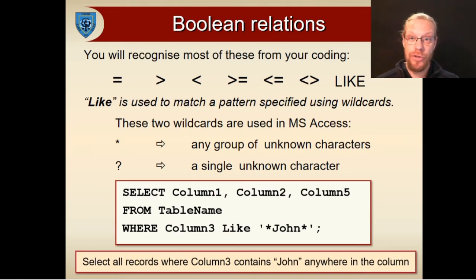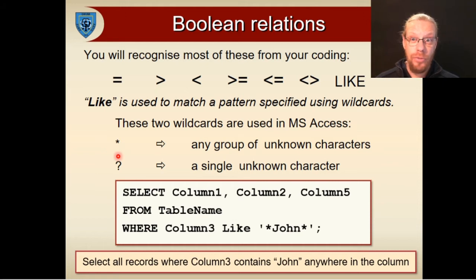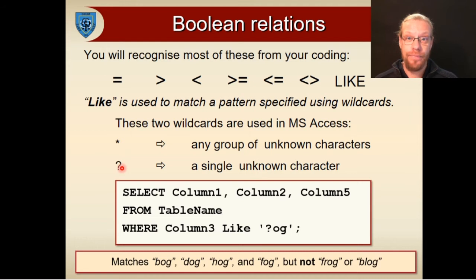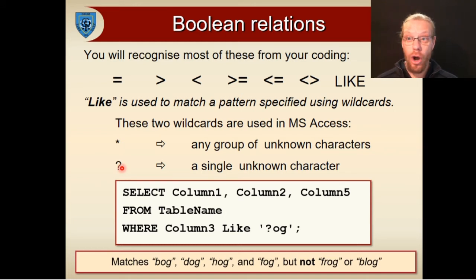This pattern is created using wildcards. Microsoft Access supports two wildcards: an asterisk, which matches any combination of characters, and a question mark, which matches a single letter, as in this example. Here, any single letter start to the word will match. So bog, cog, dog, hog, fog, log, and so on — they all match. Any other combination of letters will not, so not og, blog, clog, or frog.